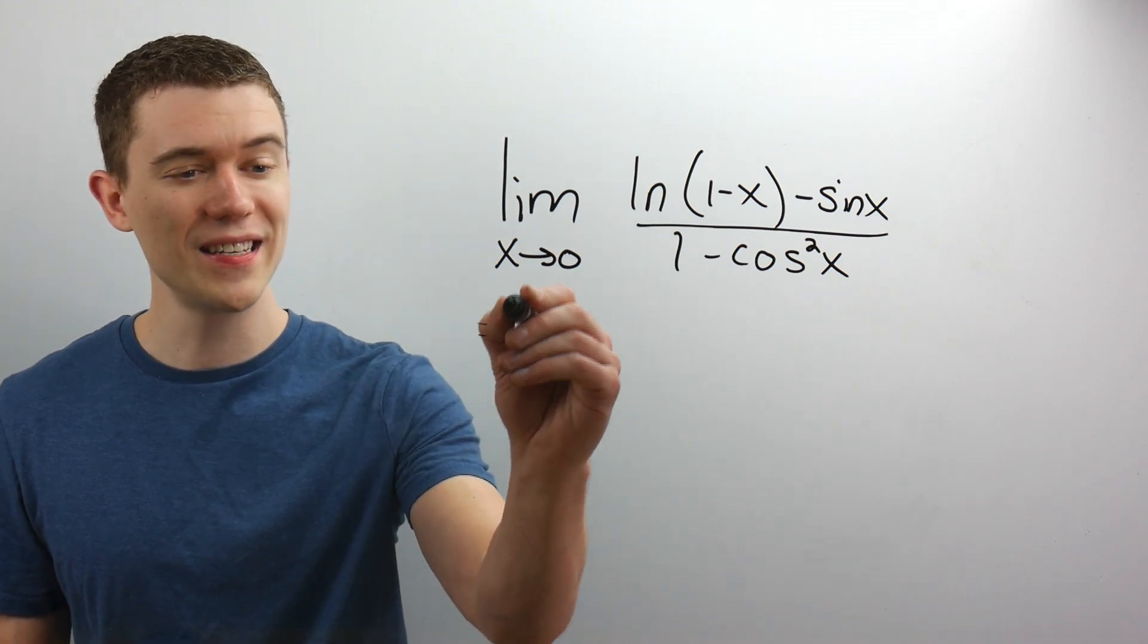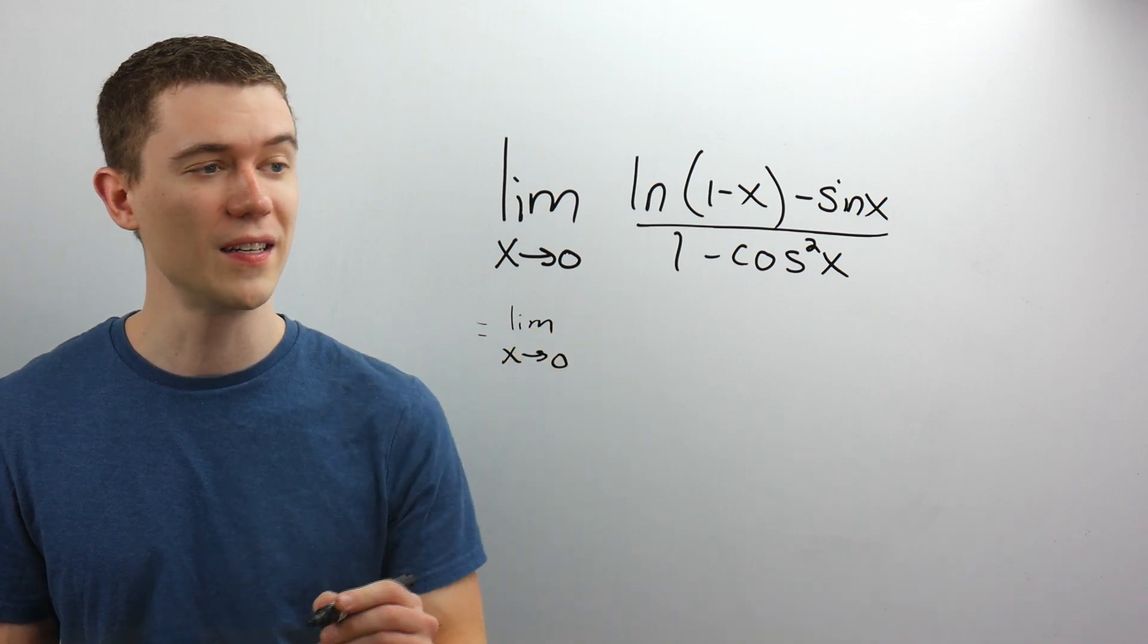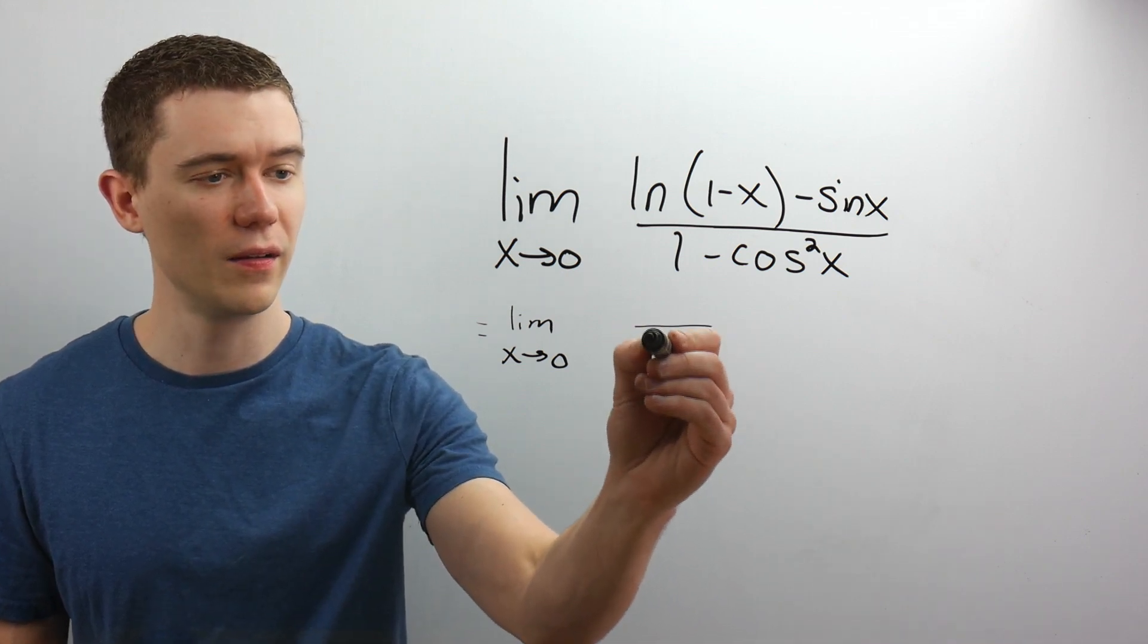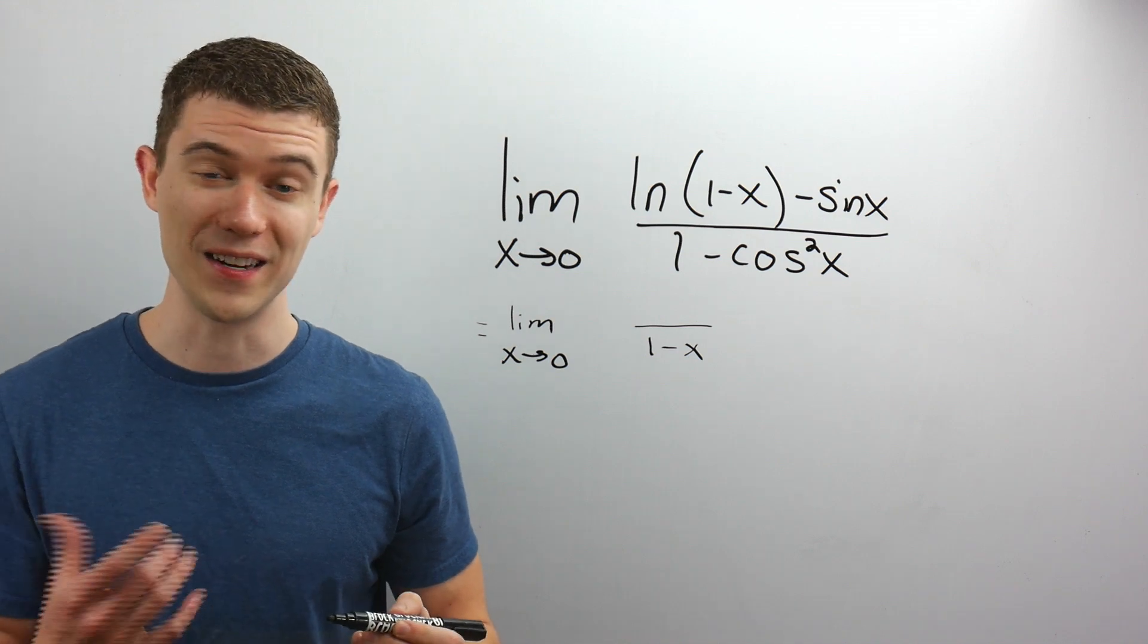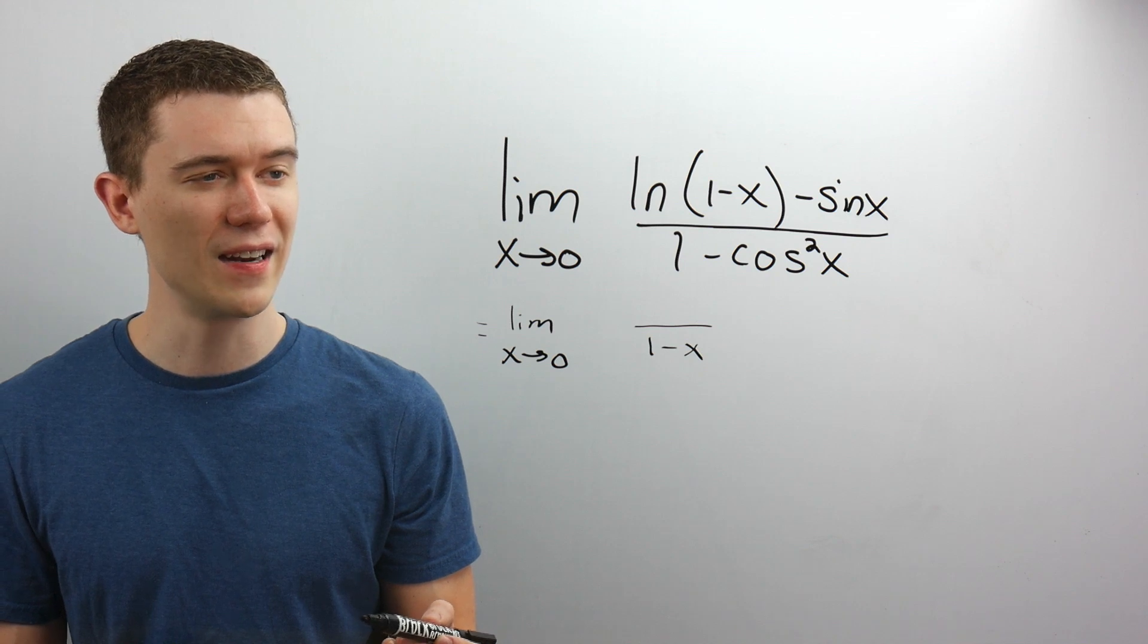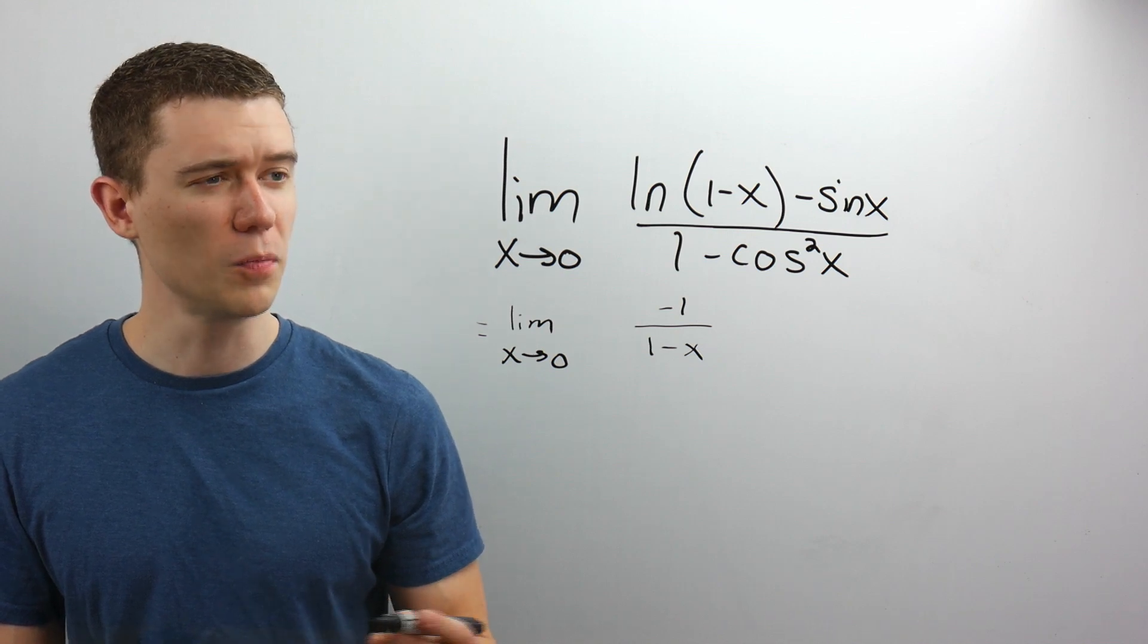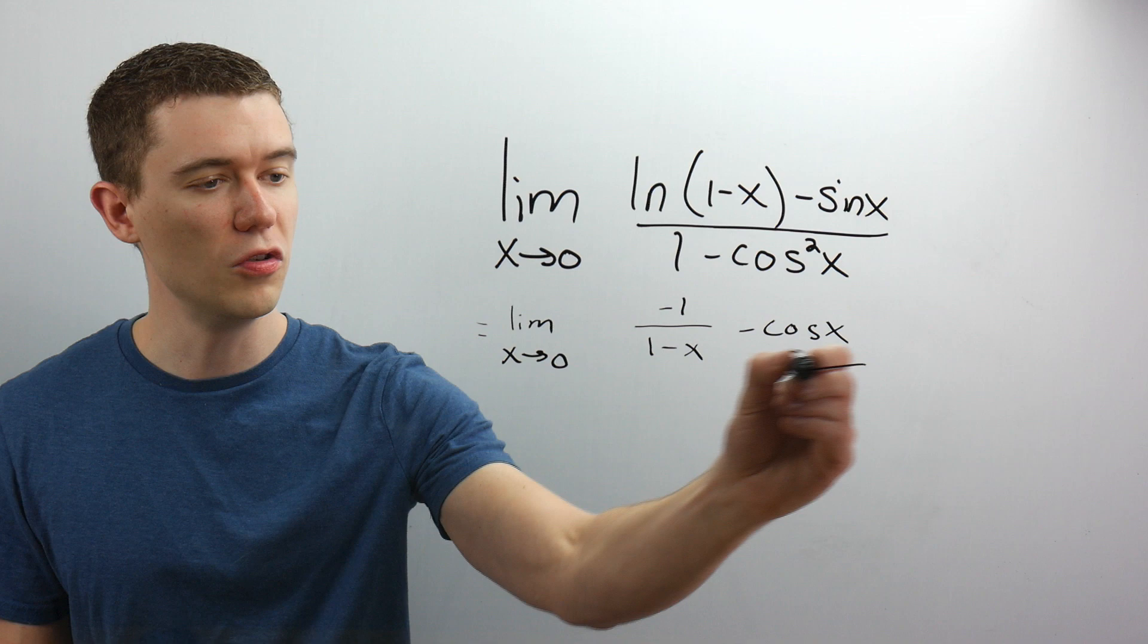So this limit is the same thing as taking the exact same limit. But take the derivative here, the derivative of ln of 1 minus x. Well, the 1 minus x goes on the bottom. That's rules for deriving the natural log function. And by the chain rule, I need to multiply by the derivative of the inside. The derivative of 1 is 0. The derivative of minus x is minus 1. So that's the first part. The derivative of sine is cosine. So there's our numerator.